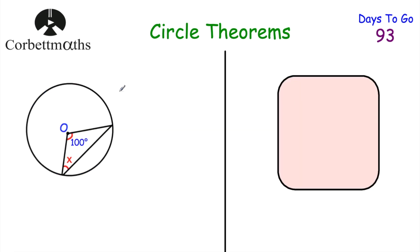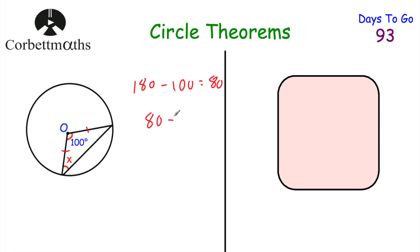Before we look at the next circle theorem, one thing to watch out for when dealing with circle theorem questions is that if you have two radii, they're the same length as each other. So you may find that there are isosceles triangles involved. Here, because this is the centre and both sides are radii, this is an isosceles triangle. So we do 180 subtract 100, which equals 80, then divide by 2 to get 40 degrees. So x is 40 degrees.